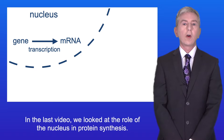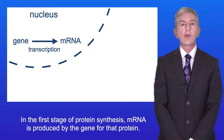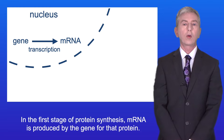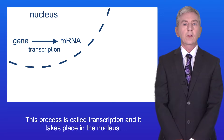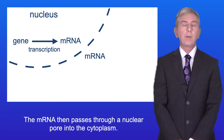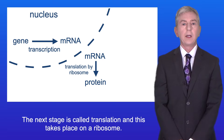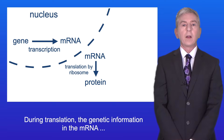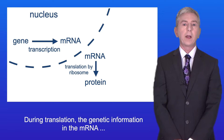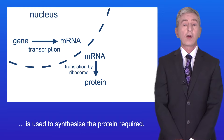In the last video we looked at the role of the nucleus in protein synthesis. In the first stage, mRNA is produced by the gene for that protein. This process is called transcription and it takes place in the nucleus. The mRNA then passes through a nuclear pore into the cytoplasm. The next stage is called translation and this takes place on a ribosome. During translation the genetic information in the mRNA is used to synthesize the protein required.